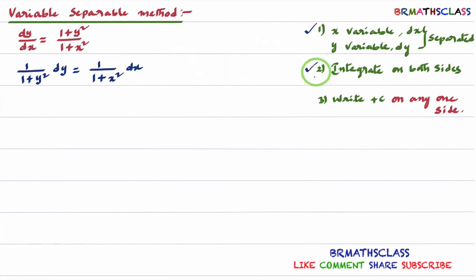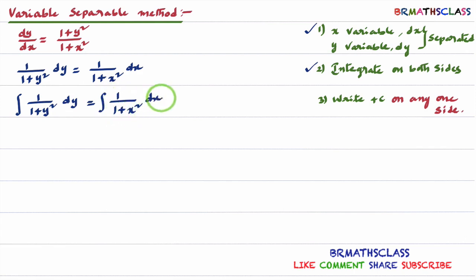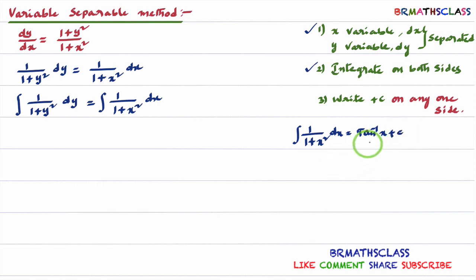After that, we integrate on both sides. The integral of (1/(1 + y²)) dy equals the integral of (1/(1 + x²)) dx. We know this formula from the integration chapter: the integral of 1/(1 + x²) dx is tan⁻¹x + c, because the derivative of tan⁻¹x is 1/(1 + x²). We learned this formula in integration.